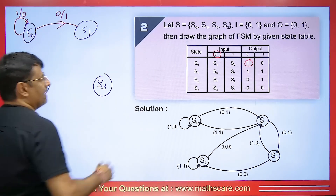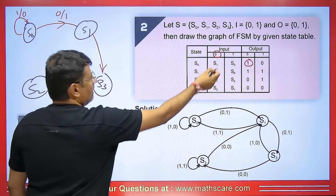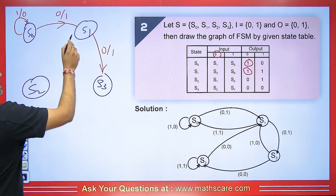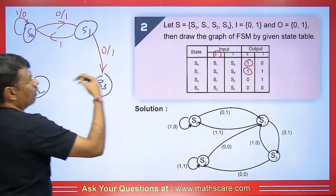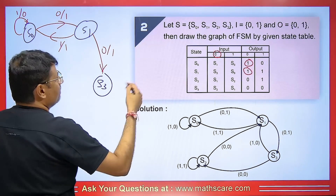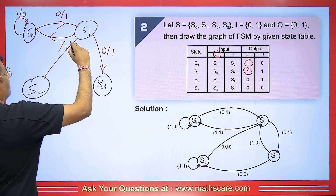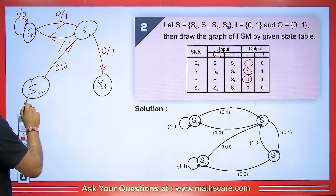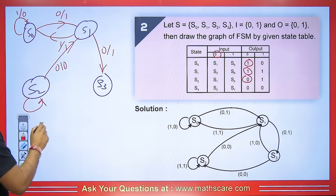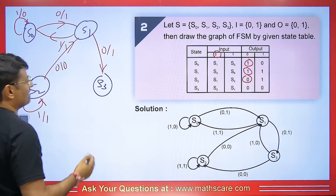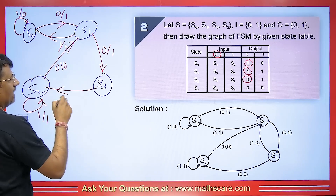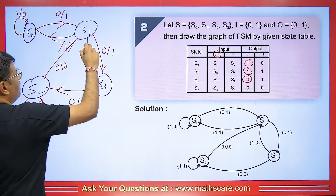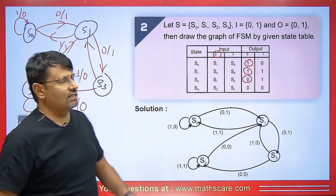When S1 goes to S3, the input is 0 and the output is 1. When S1 goes to S0, the input is 1 and the output is also 1. For S2 going to S1, the input is 0 and the output is 0. S2 makes a self-loop with input 1 and output 1. For S3 going to S2, input is 0 and output is 0. When S3 goes to S1, input is 1 and output is 0.